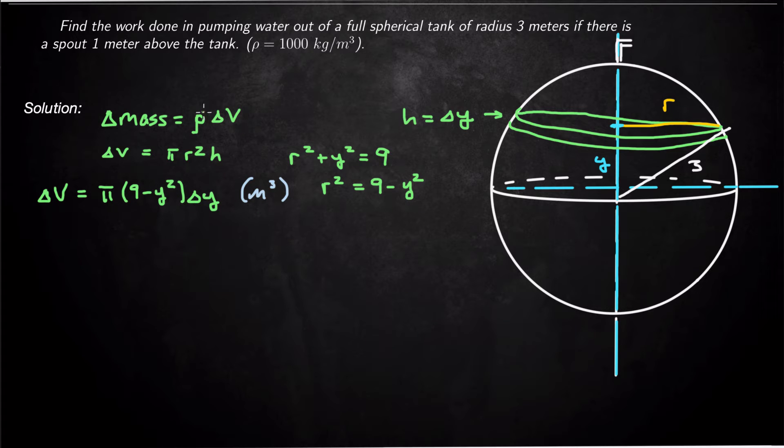Now I can get my mass if I multiply my density by this value here. So mass of this little sheet of water, delta mass is equal to 1,000 times delta V. So 1,000 π (9 - y²) delta y. So that's our mass. Now that's the mass of this little green sheet of water, that's how many kilograms are in that sheet of water. So kilograms right here for the units of this.